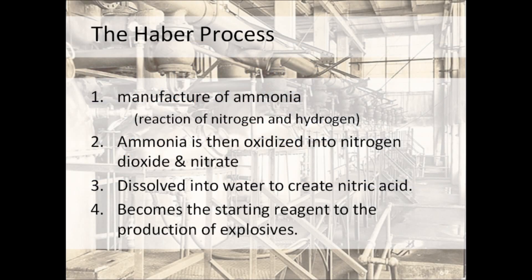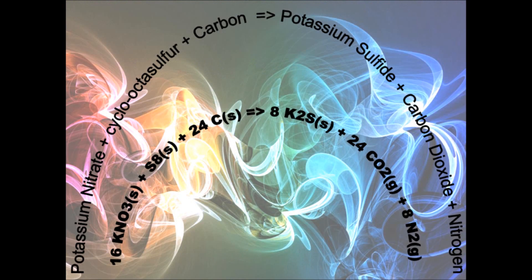Additionally, the Haber process plays a part in explosives. In the year 1245, Friar Roger Bacon combined saltpeter, carbon, and sulfur to create gunpowder. The production of gunpowder involves a very powerful exothermic reaction. Potassium nitrate plus cyclooctasulfur plus carbon would create potassium sulfide plus carbon dioxide and nitrogen.